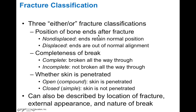For the position of the bone, there are basically two positions it can be in: non-displaced or displaced. If it's non-displaced, the ends retain their normal position so the bone is in its normal aligned position within the joint. Displaced means the ends of the bone are out of normal alignment, which could be due to joint derangement where the bones are displaced from their joint and out of their normal position.